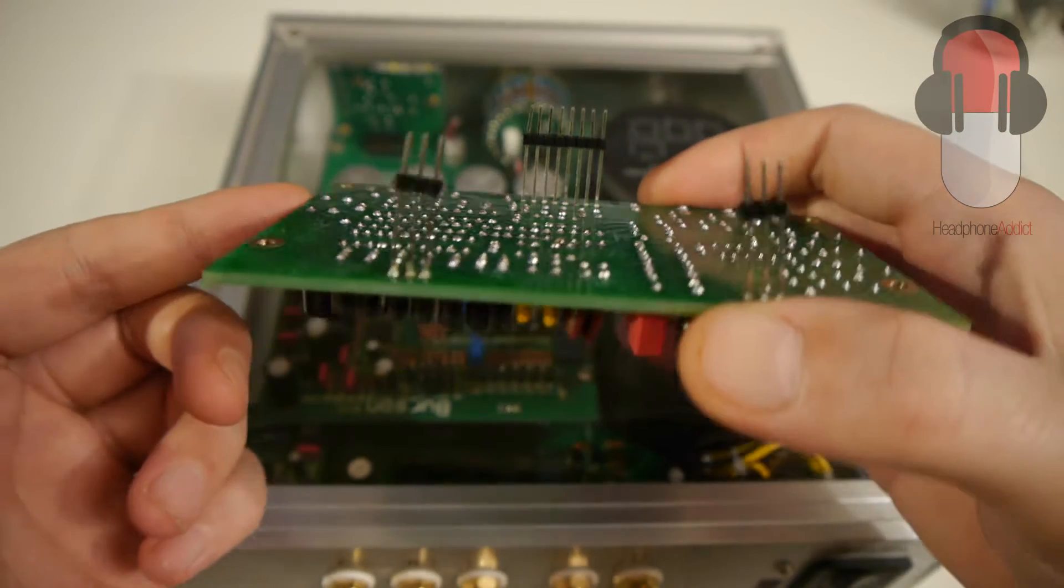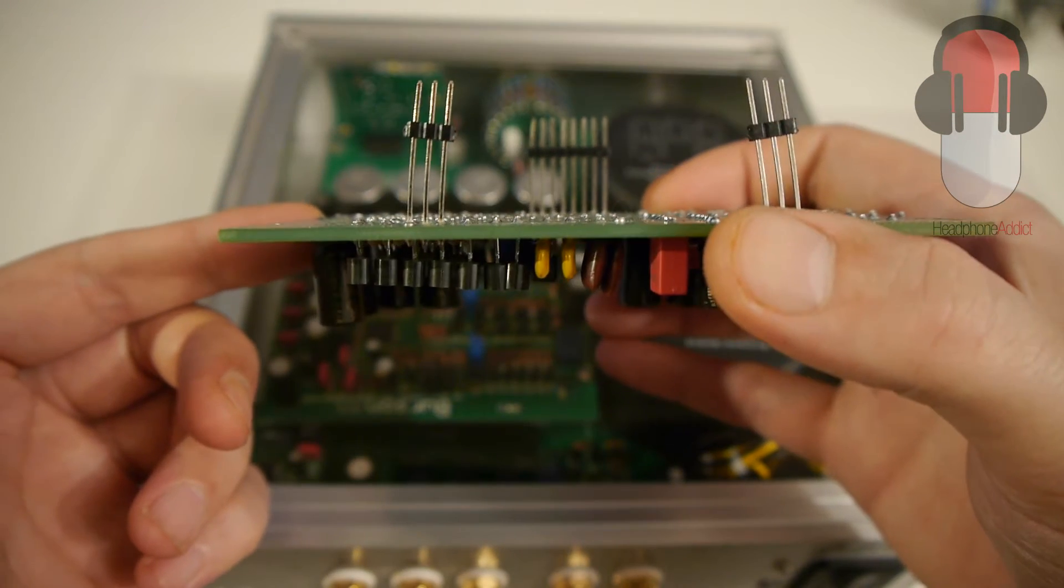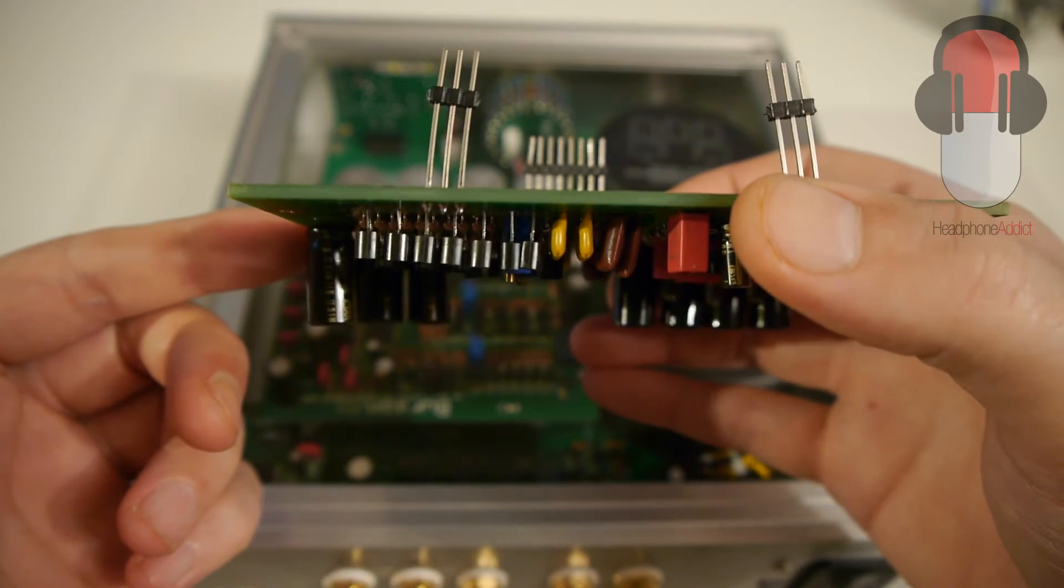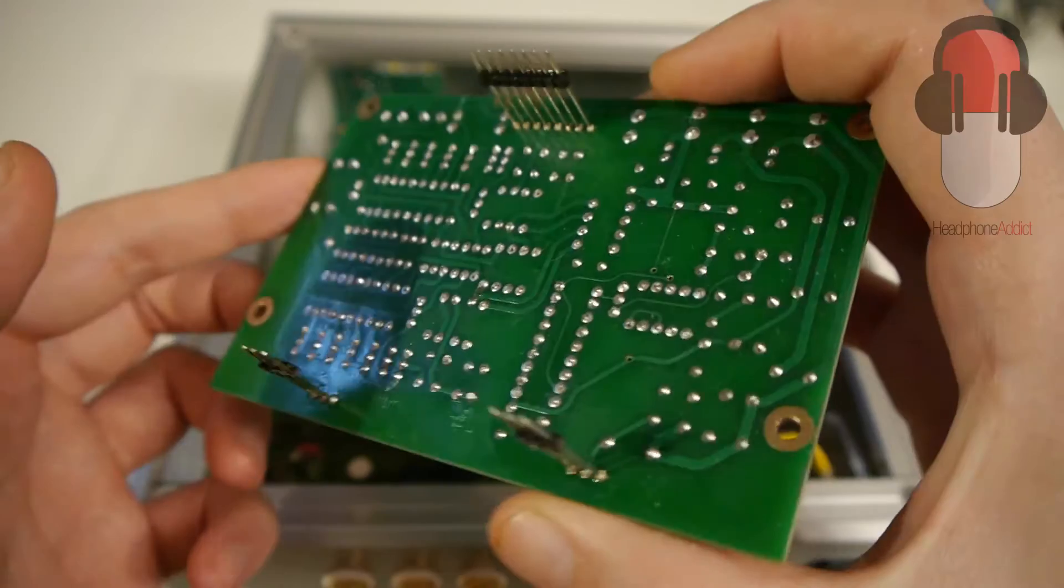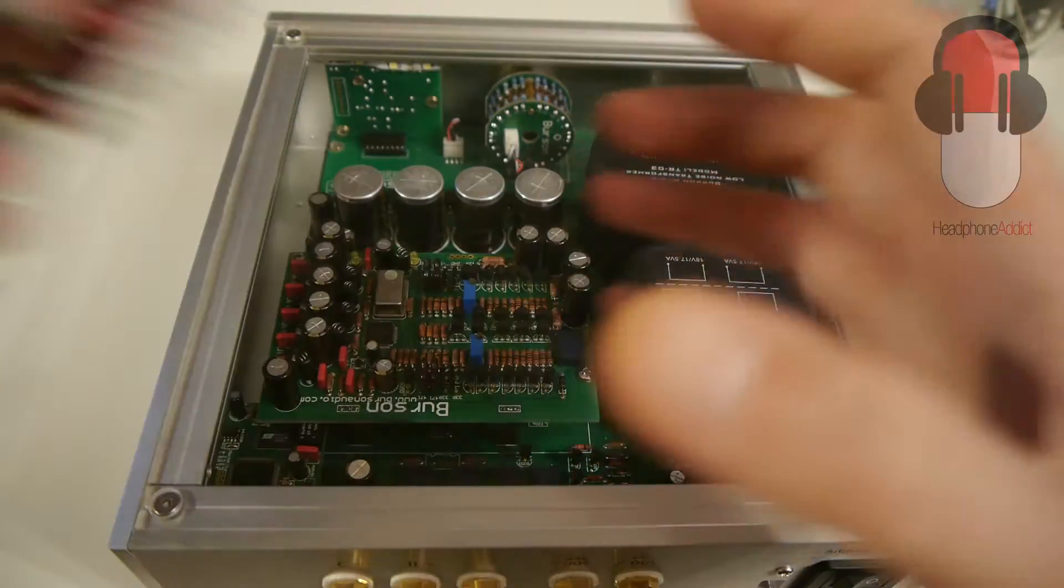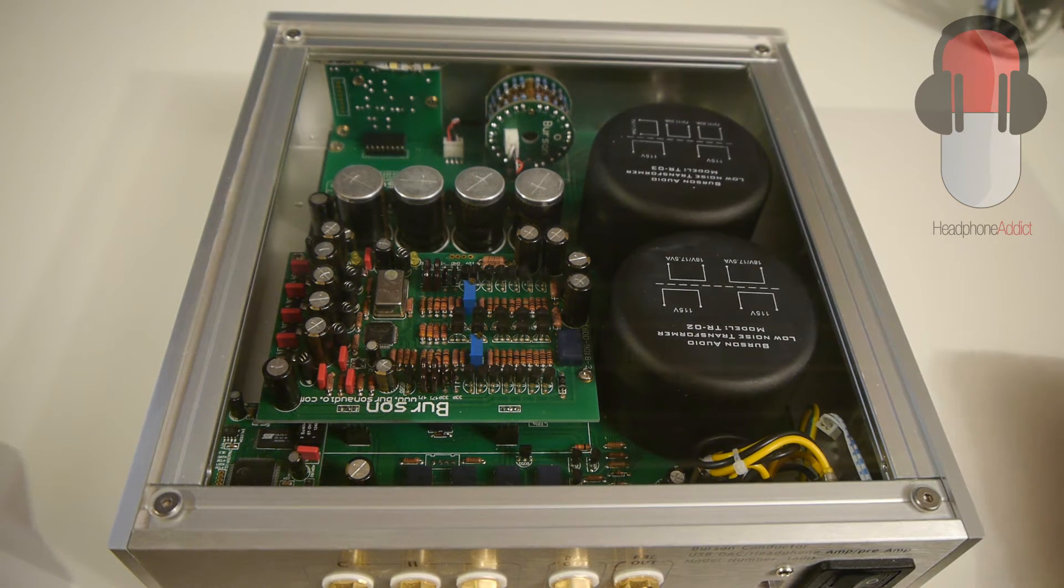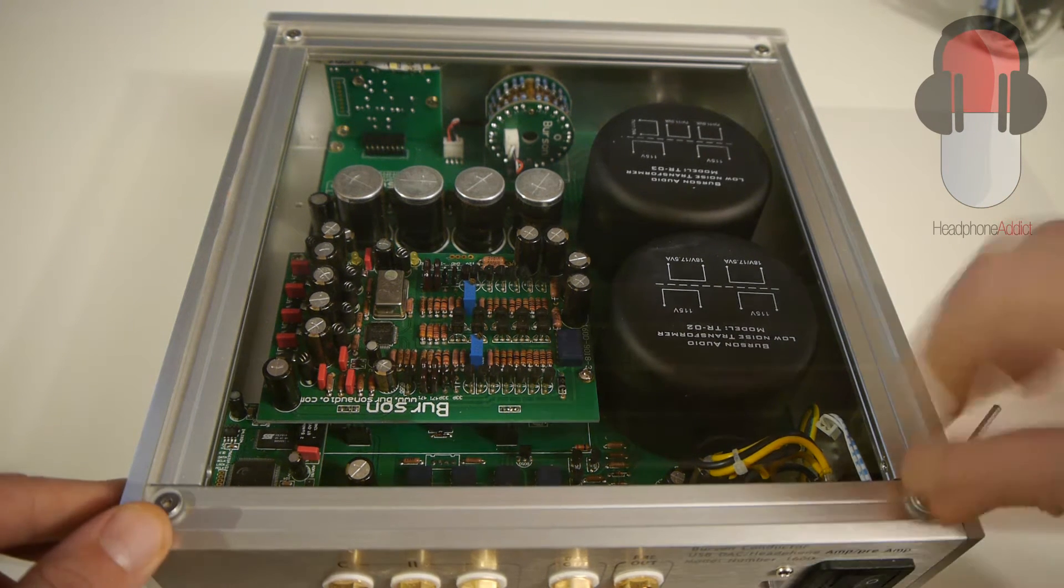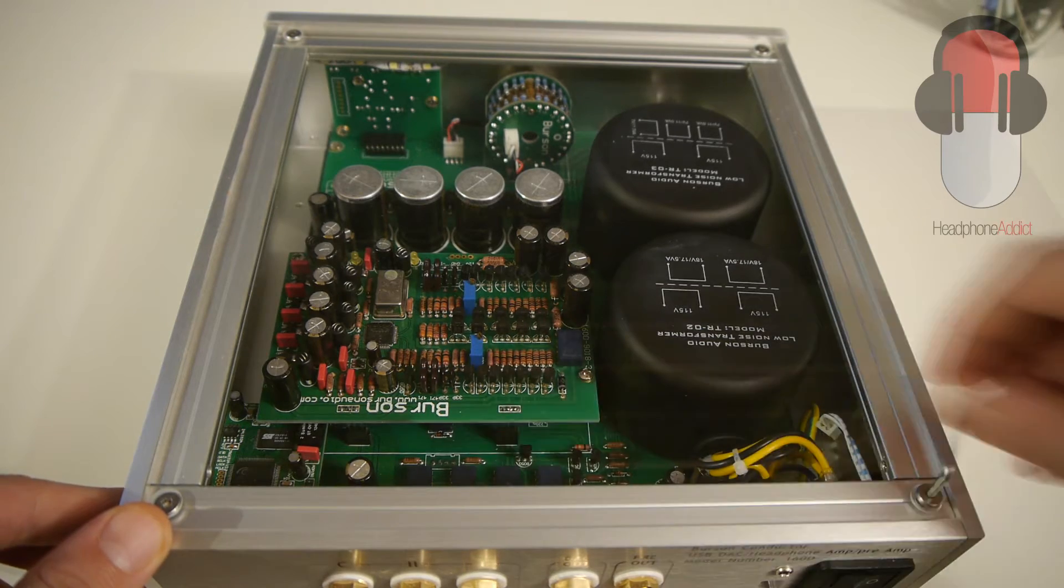Here I'm showing you the 1793 DAC card. As you can see, Burson hasn't really paid much attention to the packaging - the pins are pretty bent. Burson should definitely ramp up their packaging quality.